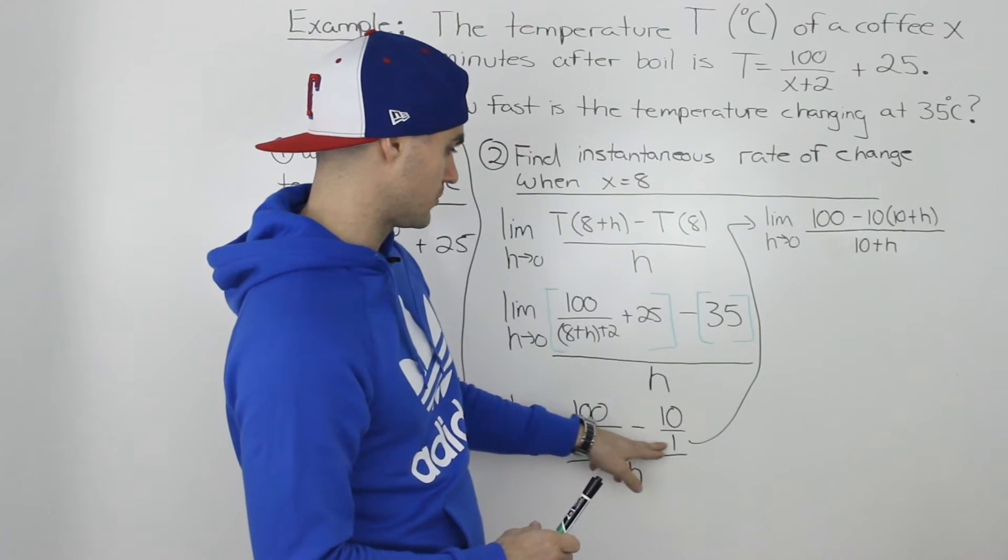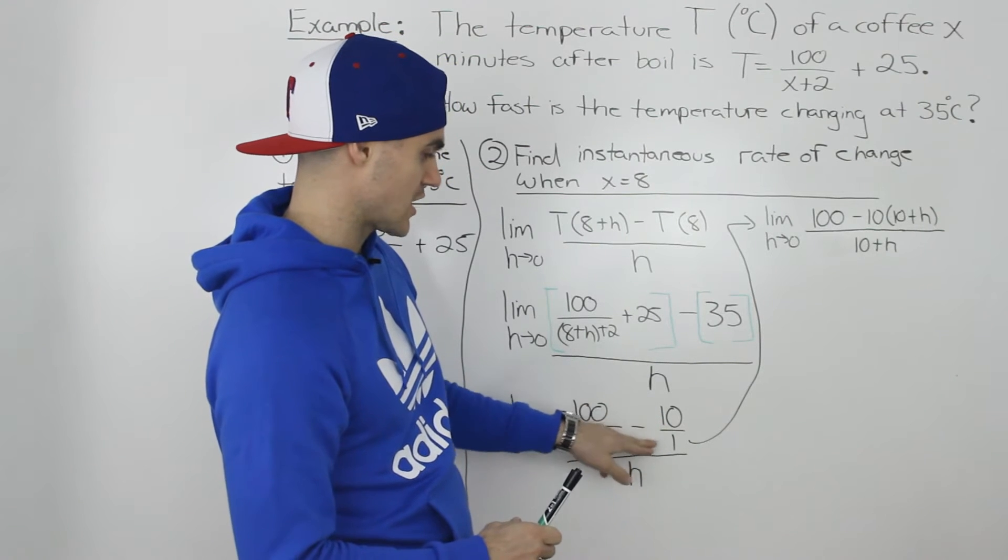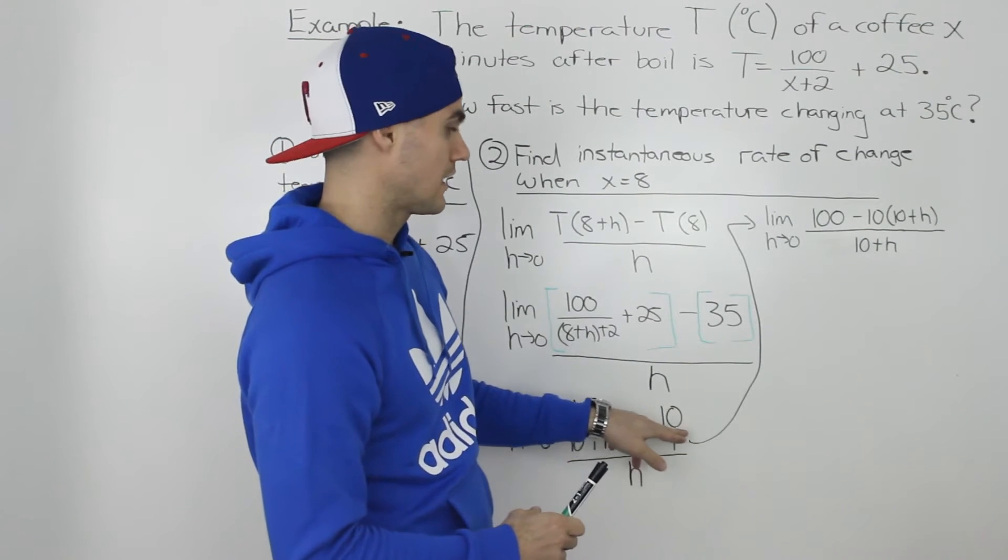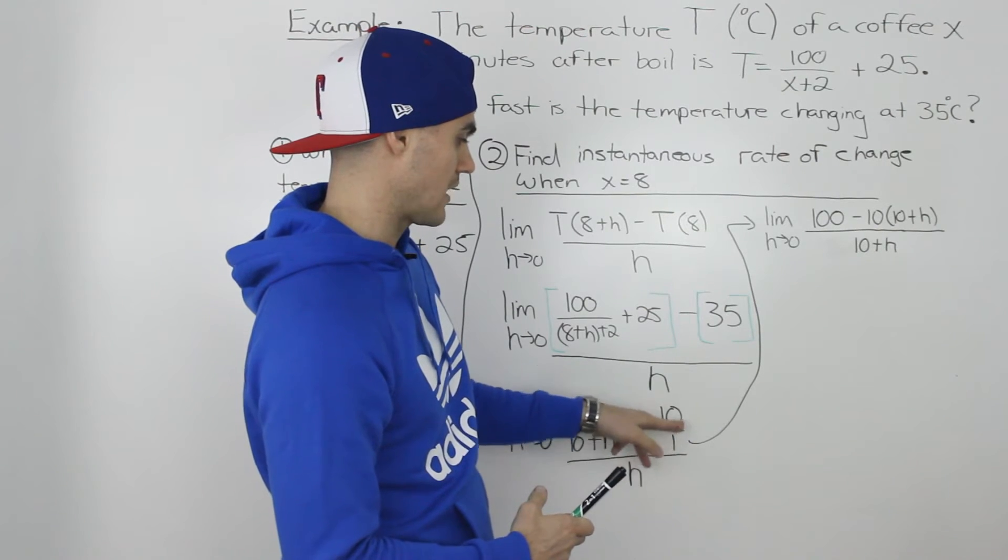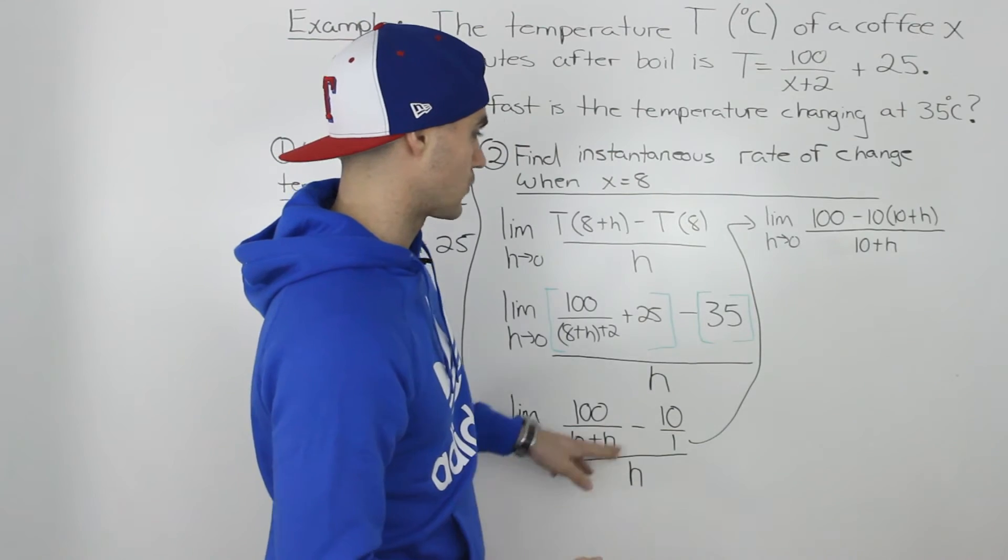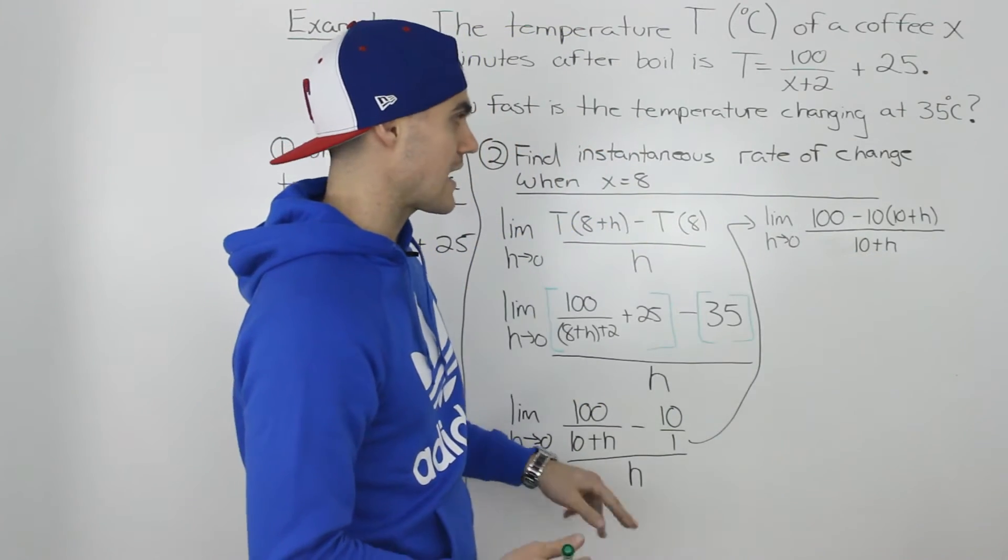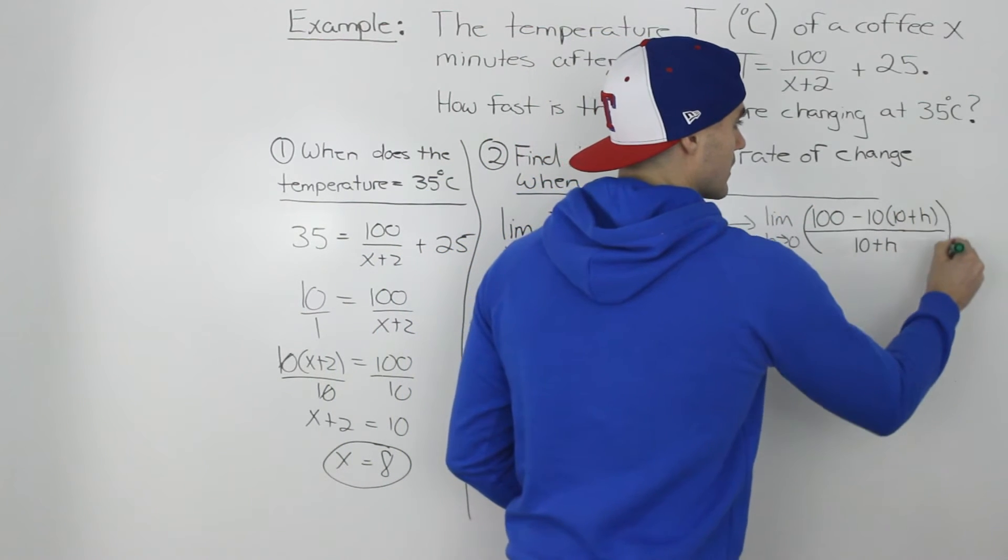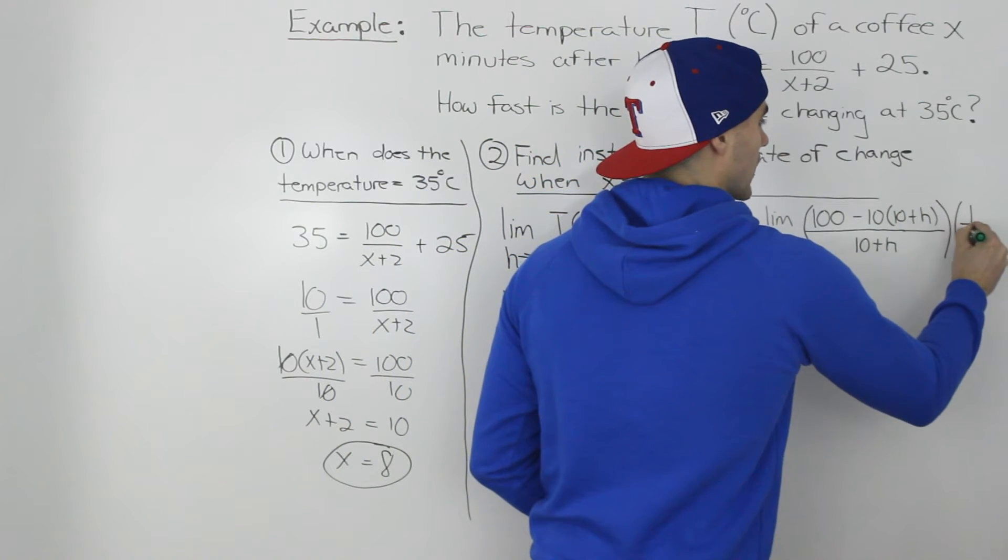So basically, we multiplied this fraction negative 10 over 1 by 10 plus h. We multiplied the denominator by that. And since we multiplied the denominator by that, we have to also multiply the numerator by that. And we're dividing this whole expression still by h. But instead of dividing it by h, let's just multiply it by 1 over h.